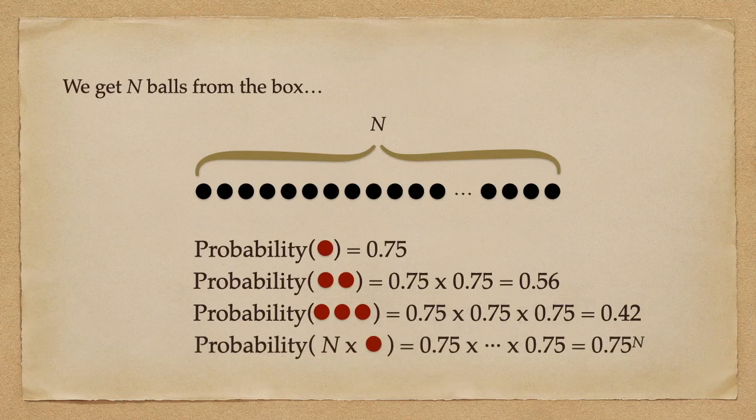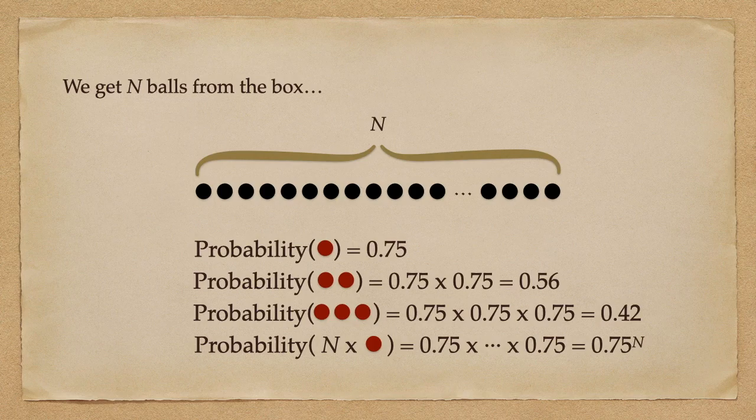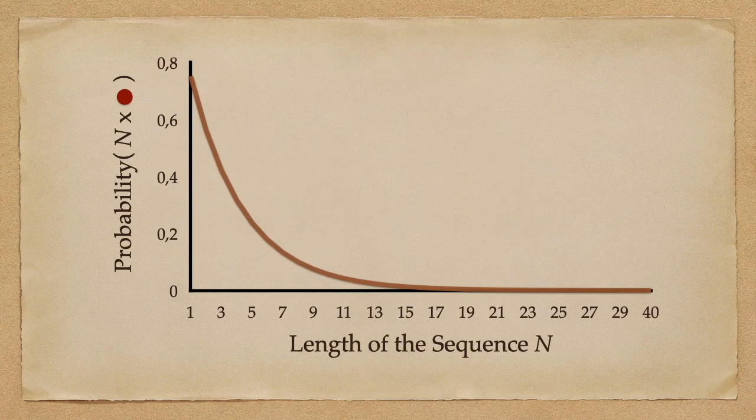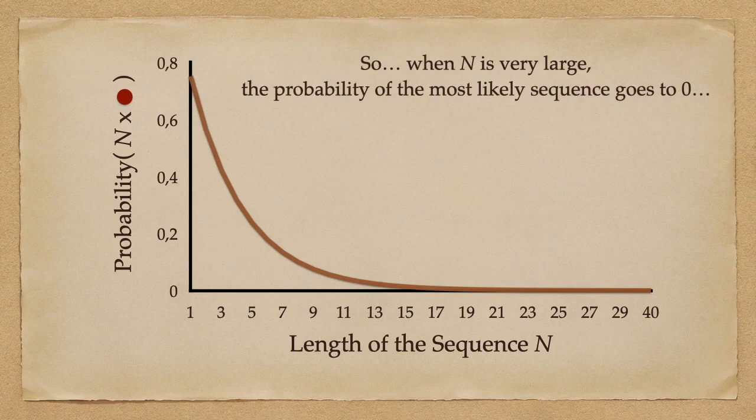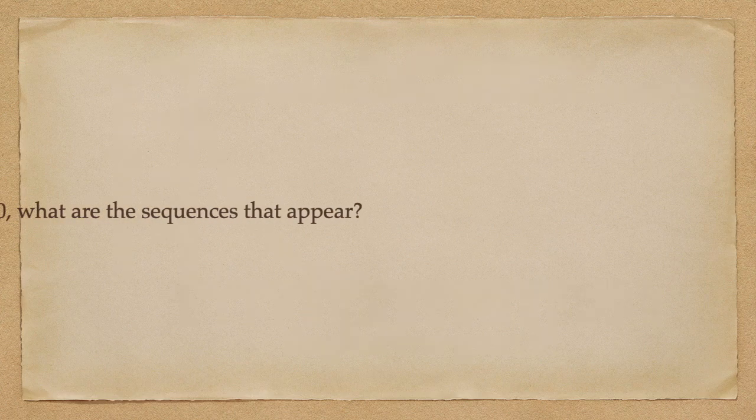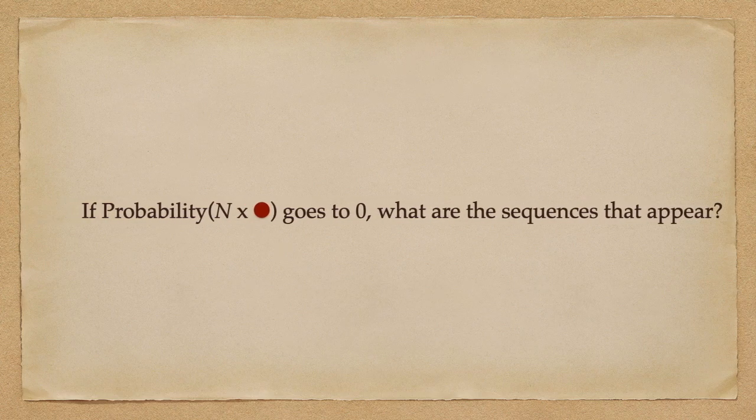This probability decays with n as follows: We can see that the most likely sequence appears with very high probability at low n, but its probability vanishes as n increases. So if the probability of the most likely sequence goes to zero as n increases, what are the sequences that appear?